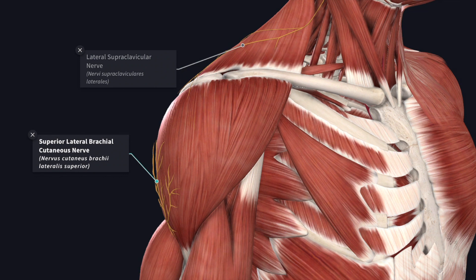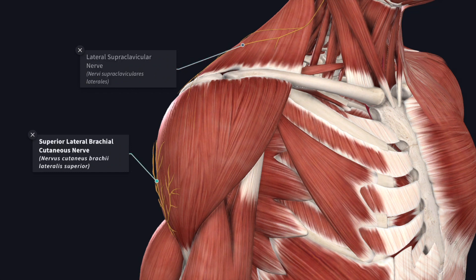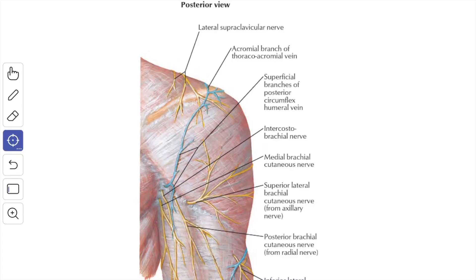The shoulder region is supplied by the lateral supraclavicular nerve and the axillary nerve and its upper lateral cutaneous branch. The scapular region is supplied by the dorsal primary rami of the lower cervical and upper thoracic nerves in craniocaudal sequence.